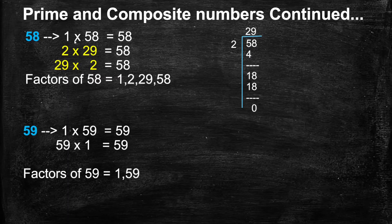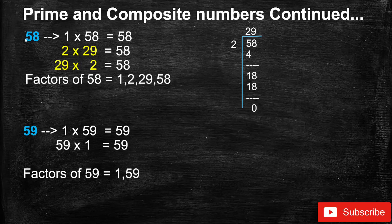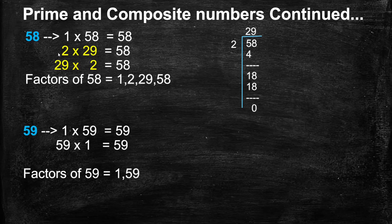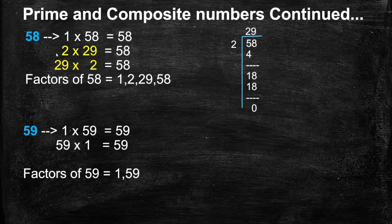Next, 58. 1 is a factor of every number, so 1 times 58 equals 58. 58 is a multiple of 2 because the ones digit is an even number. When we divide 58 by 2, we get quotient 29, so 29 is another factor of 58, and 2 times 29 equals 58. There is no other combination of 58. At last, 29 times 2 equals 58. We stop here because 2 and 29 occurred earlier.